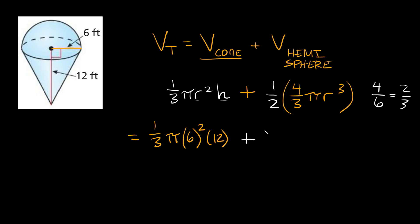So we can rewrite those fractions as two-thirds, times the rest of our formula: pi times the radius cubed. The radius for the hemisphere is the exact same as the cone, which is 6 feet, so we get 6 cubed.